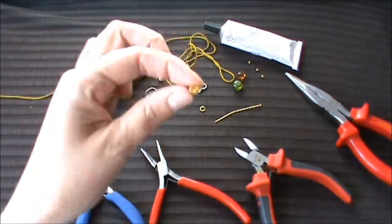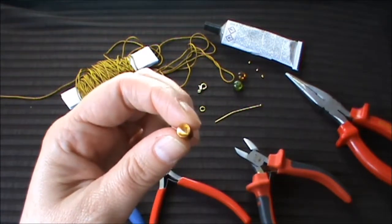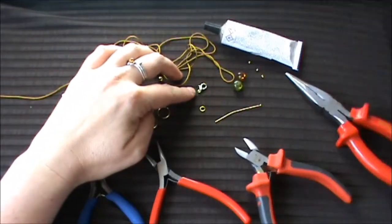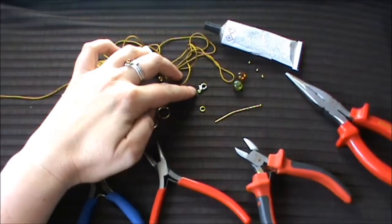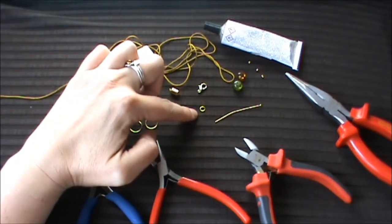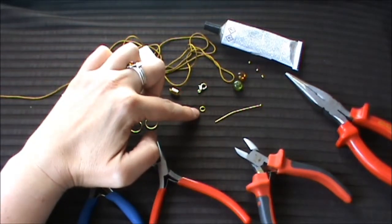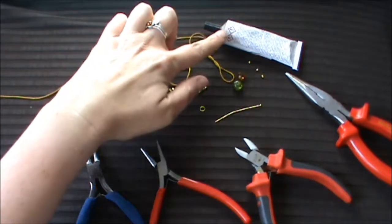You need a glue in barrel cord end, a lobster clasp about 12mm length, a jump ring 5mm, and glue.